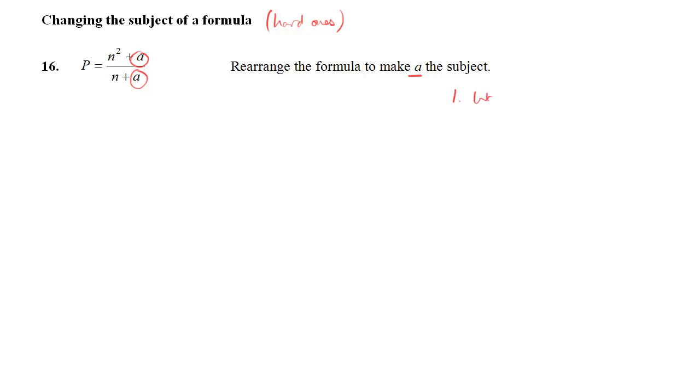Now the first problem in trying to get A as the subject is that it appears in the denominator of a fraction, and we don't really want it there. We want A only on top. So the first thing to do is to remove N plus A from the bottom there. So we do the inverse of division, we multiply both sides by N plus A.